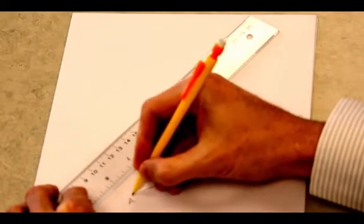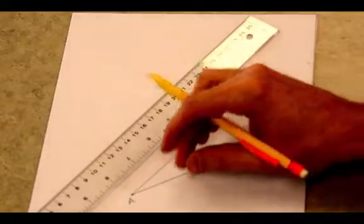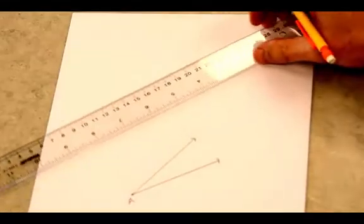I'll label it angle A. There you go. I'm going to use a straight edge just to draw a random angle. It doesn't matter how large the angle is. This is an acute angle, less than 90 degrees.